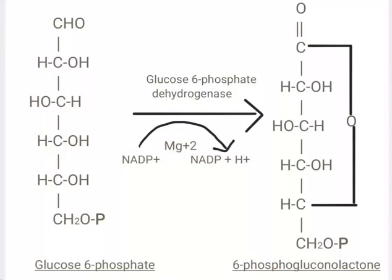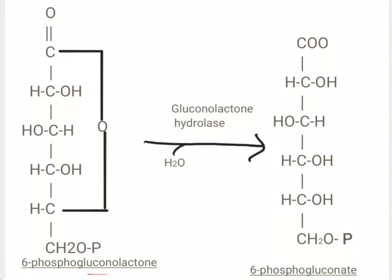First, 6 molecules of glucose-6-phosphate, in the presence of the enzyme glucose-6-phosphate dehydrogenase, which is NADP dependent, get converted into 6-phosphogluconolactone. These 6 molecules of 6-phosphogluconolactone are then hydrolyzed in the presence of the enzyme gluconolactone hydrolase, where 6 molecules of water are added, and get converted into 6-phosphogluconate.